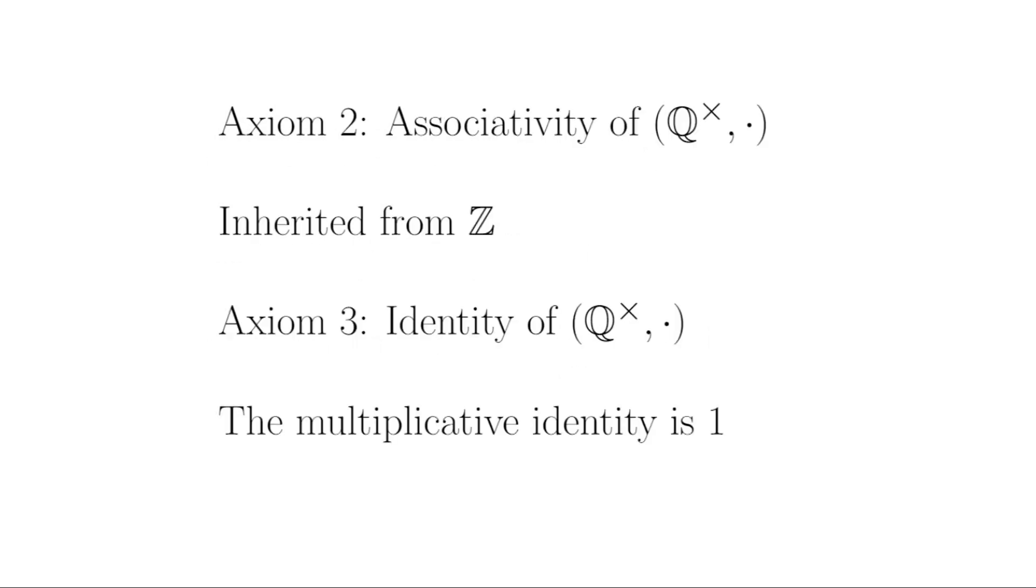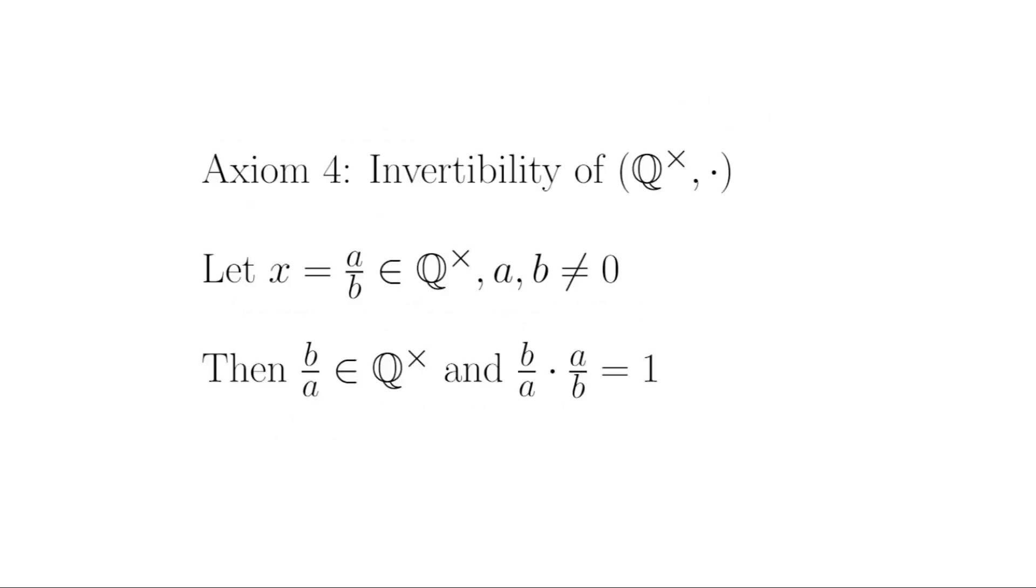The next two axioms follow swiftly. Associativity is inherited from the integers, and the multiplicative identity here is 1. And finally, to show invertibility, take any rational number x expressed as a over b. Now we've already shown that a and b are both non-zero. Hence, the multiplicative inverse b over a exists and is non-zero. And so it is in our set Q×. So we have shown that Q× is a group under regular multiplication.